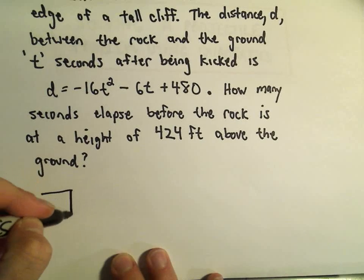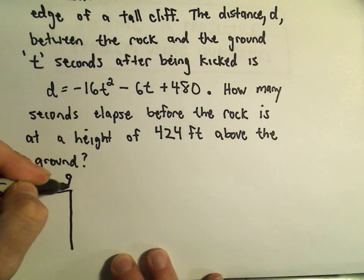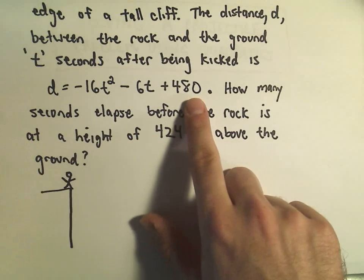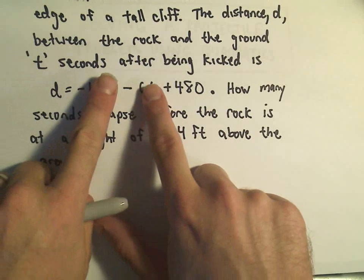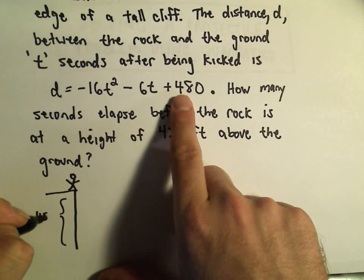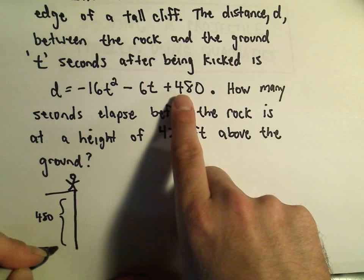Notice if you plug in t equals zero into this equation, the first two terms would go away and we would get 480. So to me that tells me that the cliff must be 480 feet tall originally.